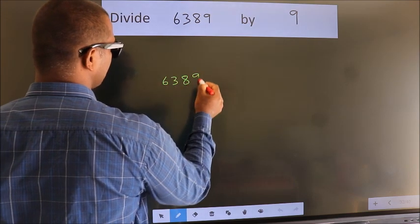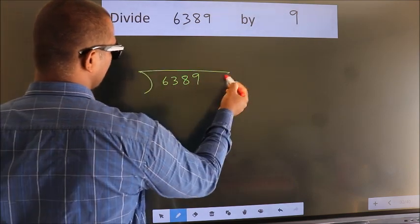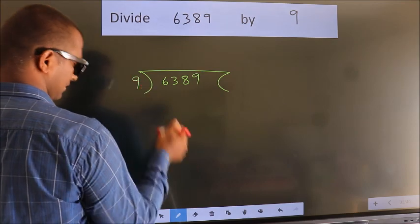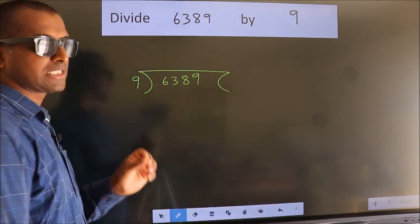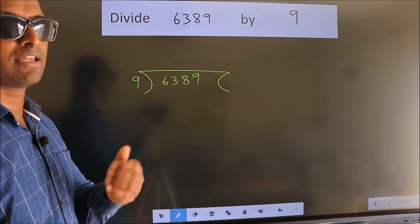6389 here, 9 here. This is your step 1. Next,